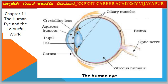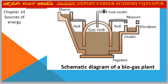Next diagram — Chapter 11: The Human Eye and the Colourful World. Diagram: The Human Eye. Parts include Retina, Optic Nerve, Cornea, Iris, Pupil, Aqueous Humour, Crystalline Lens, and Ciliary Muscles.